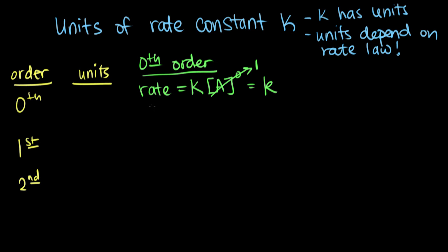The units of rate are always going to be the same — molar per second. You can think of units almost like numbers: if you have an equal sign, the units on both sides have to match. Since rate equals k, k also has to have units of molar per second. So the units of k for a zeroth order reaction are molar per second.